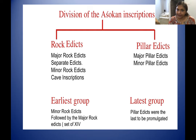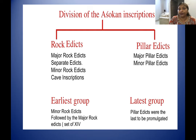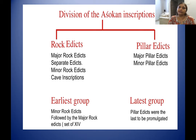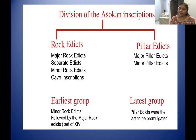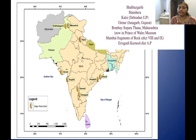Among all these, pillar edicts are also divided into major and minor. The earliest inscriptions issued are the minor rock edicts — that was the beginning of Ashoka's whole engraving scheme. Then followed the major rock edicts, and the last project undertaken was the pillar edicts, which are much more well-formed with well-distributed characters.